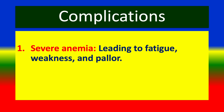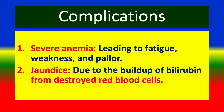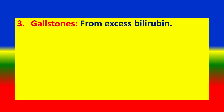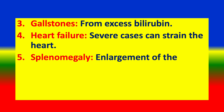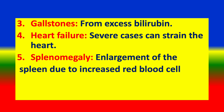Complications: (1) Severe anemia leading to fatigue, weakness, or pallor. (2) Jaundice — due to the buildup of bilirubin from destroyed red blood cells. (3) Gallstones — from excess bilirubin. (4) Heart failure — severe cases can strain the heart. (5) Splenomegaly — enlargement of the spleen due to increased red blood cell destruction.